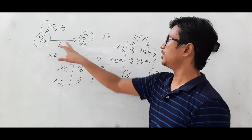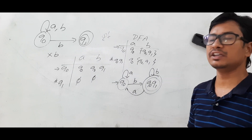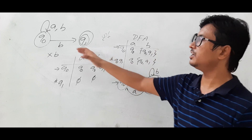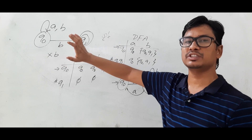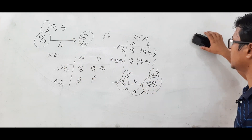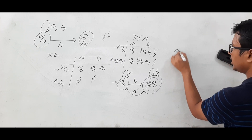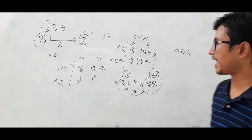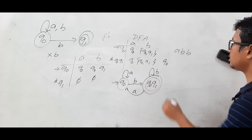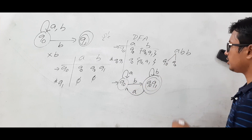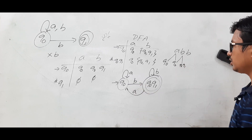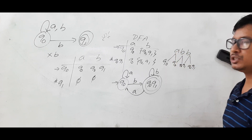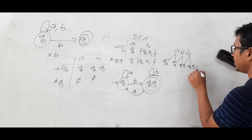Now I want to verify whether this DFA is correct. I will take string ABB, which ends with B, so the NFA accepts it and the DFA should too. From Q0 on A → Q0, Q0 on B → {Q0,Q1}, {Q0,Q1} on B → {Q0,Q1}. We reach {Q0,Q1}, which is a final state, so ABB is accepted by the DFA.